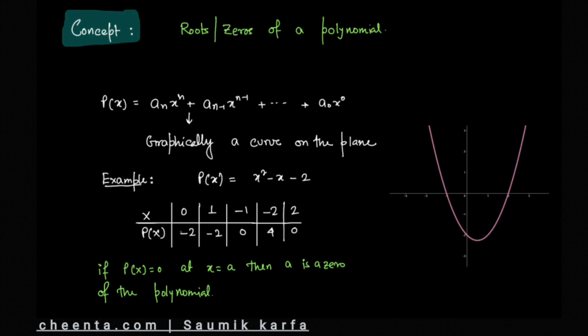We can see if we put the value 0, p(0) = 0 + 0 - 2, so the value of p(x) is -2. For 0 the output is -2. Similarly for 1 the output is -2 again. For -1 the output is 0, and for -2 and +2 the outputs are 4 and 0 respectively.